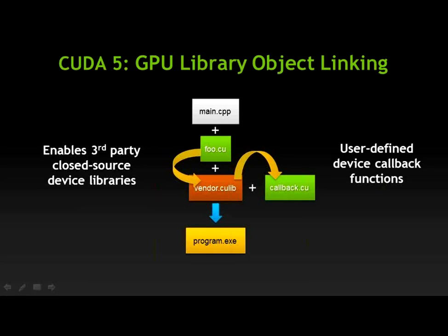GPU library object linking is available in CUDA 5, which you can download at nvidia.com/getCUDA.